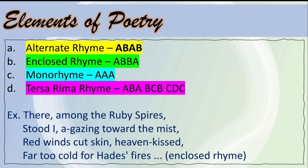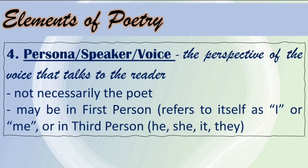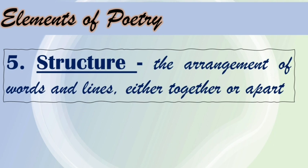Here is an example of an enclosed rhyme. Looking at the last words of every line: spires, mist, kissed, fires — notice that 'spires' and 'fires' have the same sound, and 'mist' and 'kissed' also have the same sound. So the structure is A-B-B-A. The fourth element of poetry is persona, or the speaker or voice. It is the perspective of the voice that talks to the reader — sometimes not necessarily the poet. It may be in the first person, referring to itself as 'I' or 'me,' or in third person: 'he,' 'she,' 'it,' and 'they.' The fifth element of poetry is structure — it is the arrangement of the words and lines either together or apart.